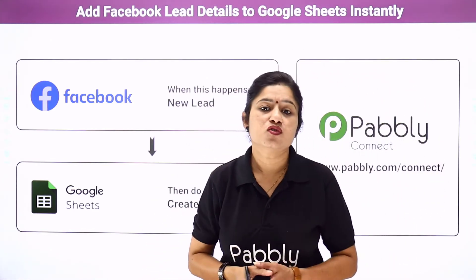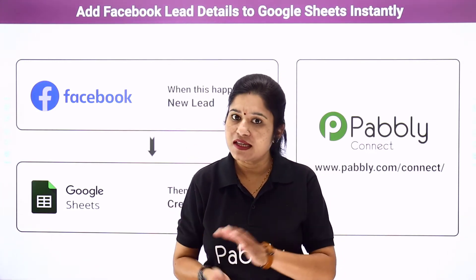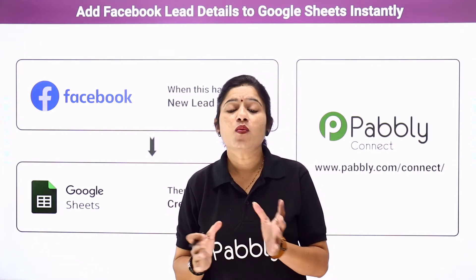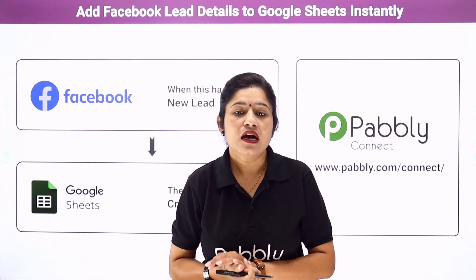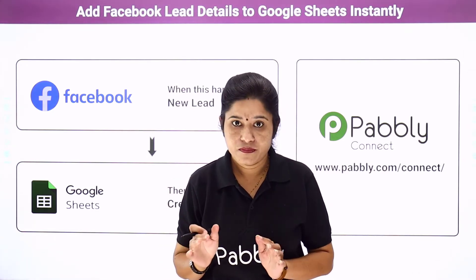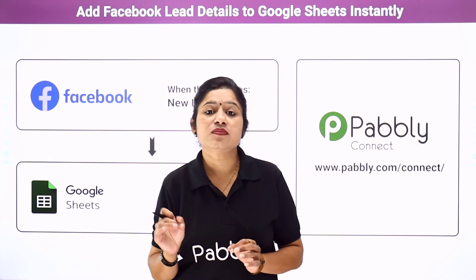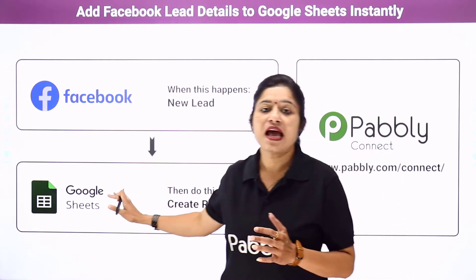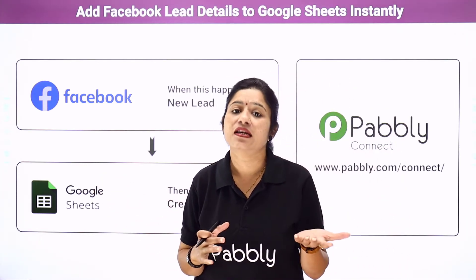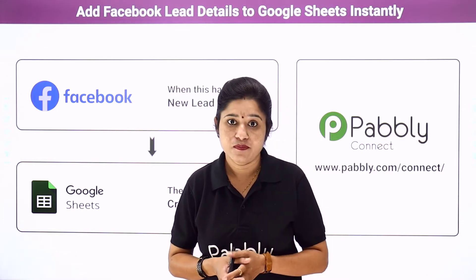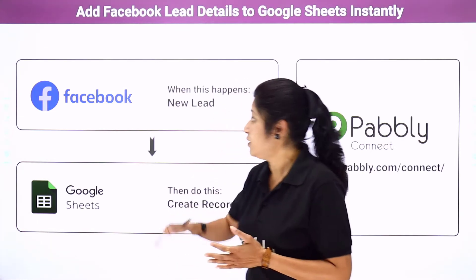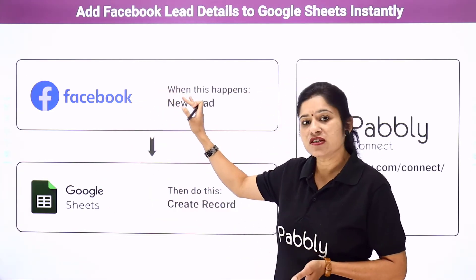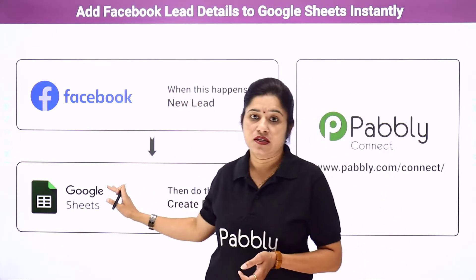Let's take an example that you are a business owner and you have created a Facebook page to advertise your business and you are running Facebook lead ads on that page. Whenever any customer clicks on those ads, a lead ad form will open. Whenever any customer fills that Facebook lead ad form, you want all the details of the customer to be added to your Google Sheets as a customer database so that you can refer to that database for future business purposes. For this we need to create a connection between Facebook lead ads and Google Sheets so that whenever the form is filled, automatically the details of the customer are added as a new record to your Google Sheets.